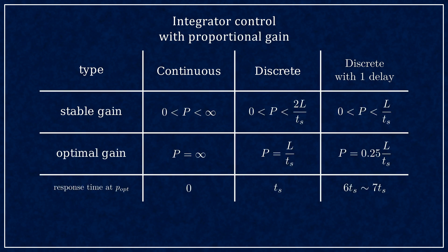I made a summary table of our examples today. In continuous time, you can make the system as fast as you want and there's no upper limit on the gain.